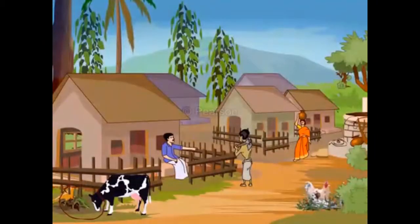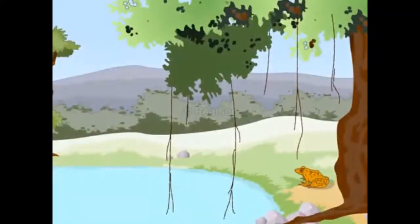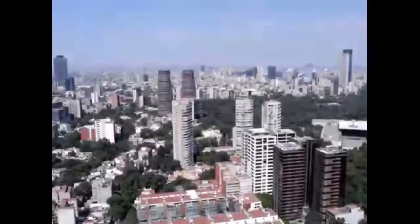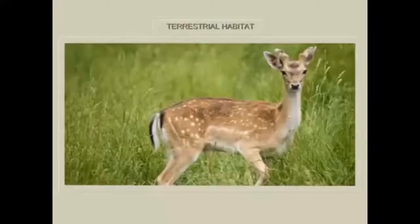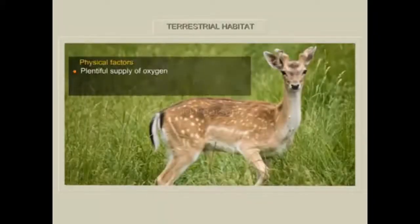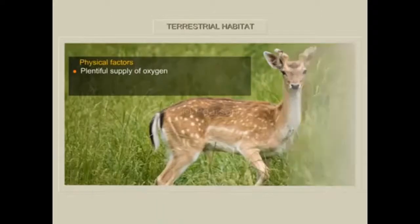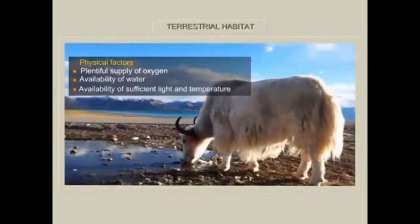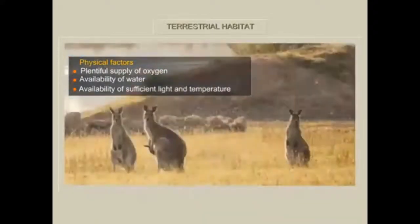Habitat — we use timber from plants to make houses. Animals like gazelle, kangaroo, and buffalo live in the bush or in the forest, and these forests are made of flowering plants.